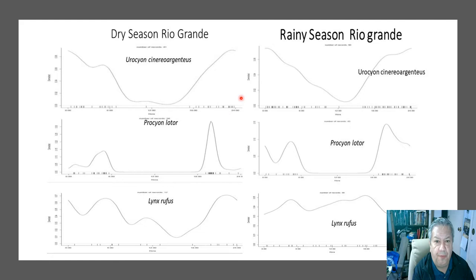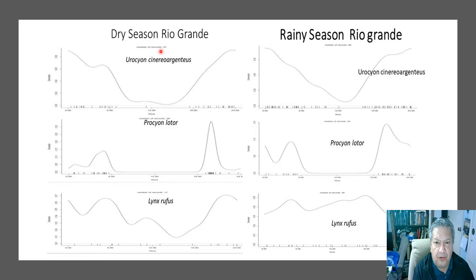What we first saw was that the activity pattern was basically a bimodal pattern, just as we found in our previous study. However, for some of those species, the bimodal pattern was more clearly indicated than for others. Specifically, for the bobcat, the bimodal pattern was not really clear.